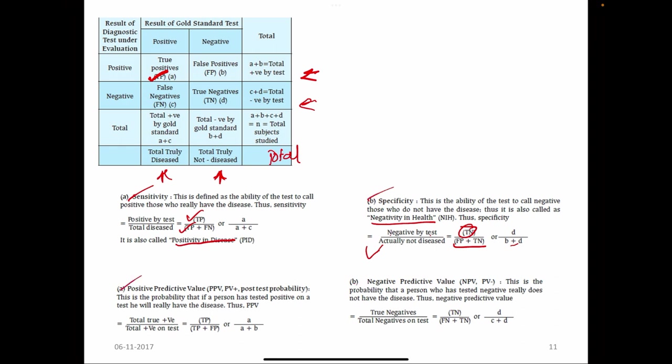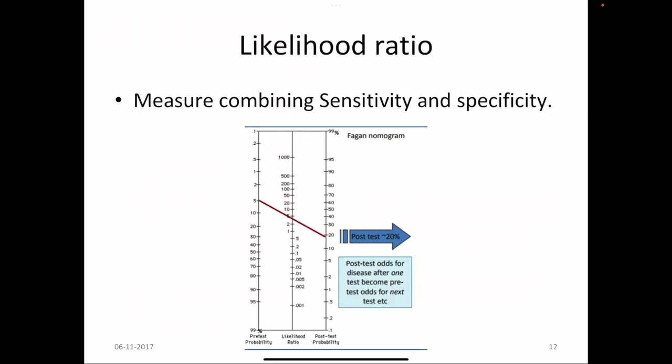We can also calculate positive predictive value and negative predictive value. Positive predictive value is: out of the total test positives, how many are actually positive? Negative predictive value follows similarly. We also have the likelihood ratio — at this stage, remember it is the measure combining sensitivity and specificity. Basically, the likelihood ratio is how many times the chance of a person having the disease has changed. It can be for the presence or absence of the disease, giving us likelihood ratio positive and likelihood ratio negative. We also have Fagan's nomogram, pre-test and post-test probability, and the likelihood ratio calculation.